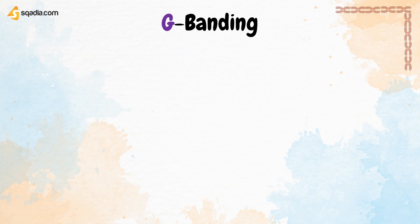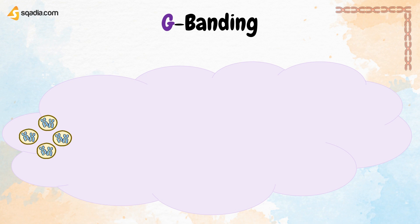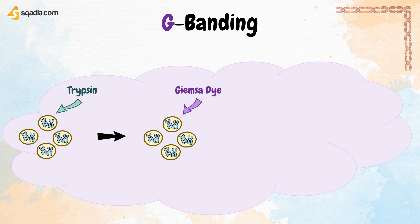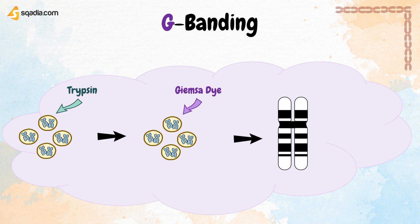The first technique is G-banding. Its name comes from Giemsa stain. In this technique, there is proteolysis of metaphase chromosomes with trypsin, which partially digests the chromosomes, followed by staining with Giemsa dye. As a result, there are dark and light bands. Dark bands are rich in adenine and thymine, and light bands are rich in guanine and cytosine.